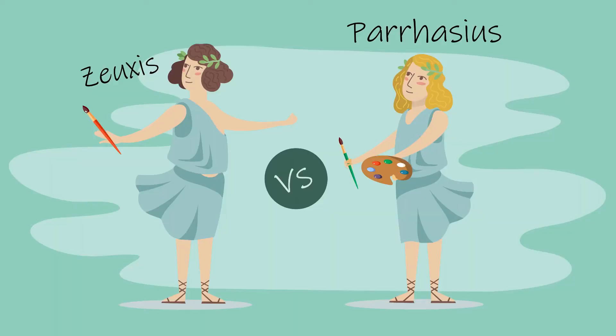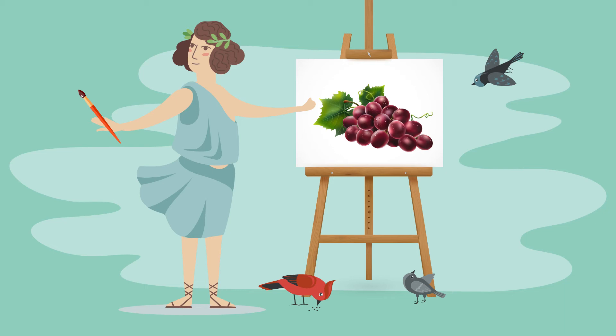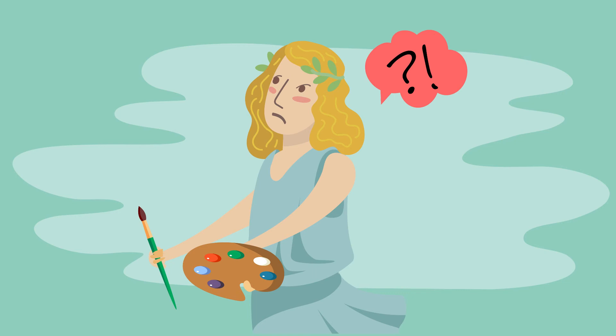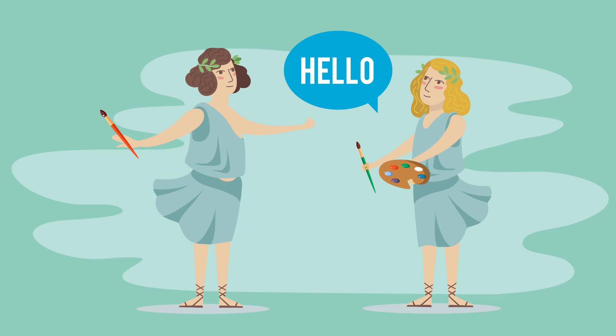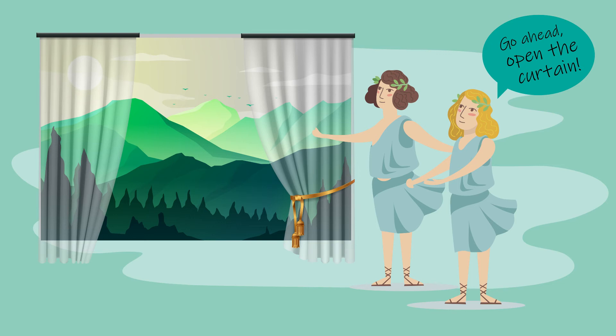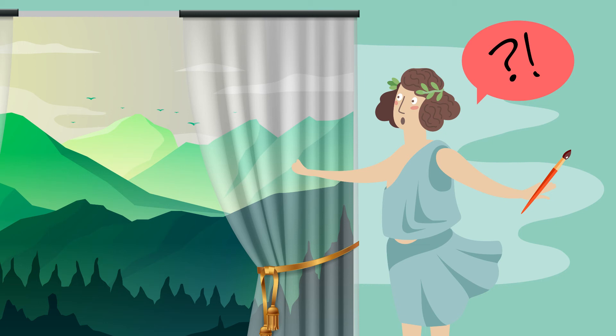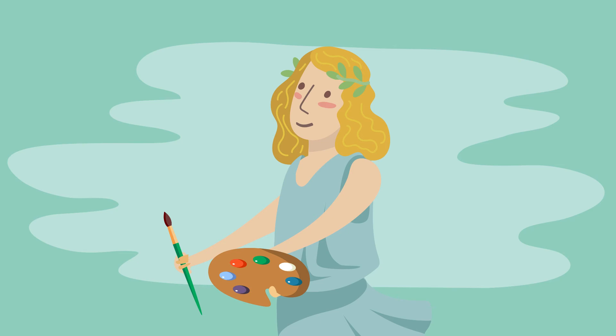An ancient Greek story tells of a contest between two renowned painters, Zeuxis and Parrhasios. Zeuxis produced a still-life painting so convincing that birds flew down to pick at the painted grapes. Parrhasios didn't like the attention Zeuxis received, so he decided to trick the artist. He asked Zeuxis to judge one of his paintings that was behind a pair of tattered curtains. When Zeuxis tried to pull back the curtains, he could not — as the curtains were included in Parrhasios's painting, making Parrhasios the winner.